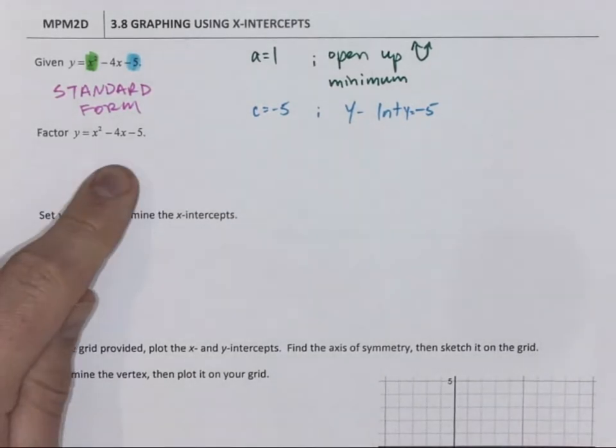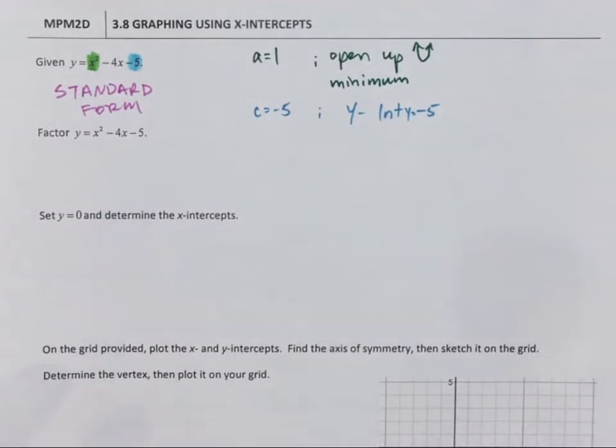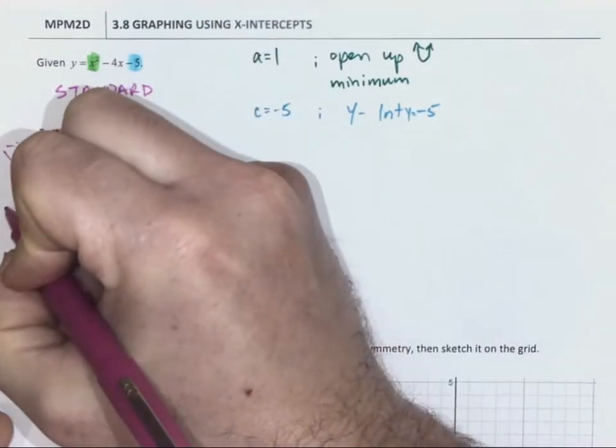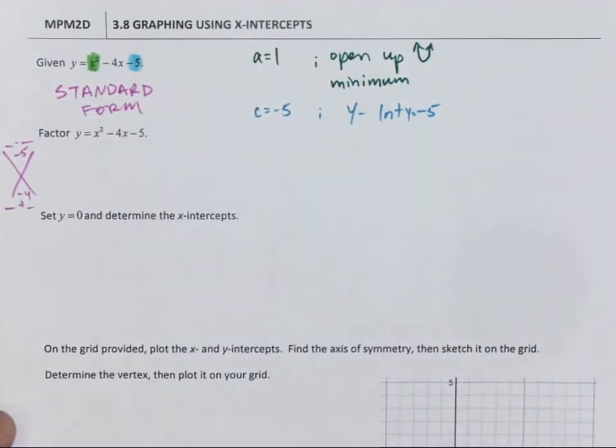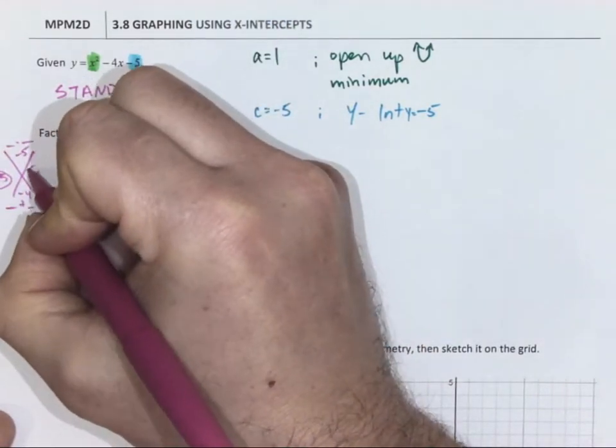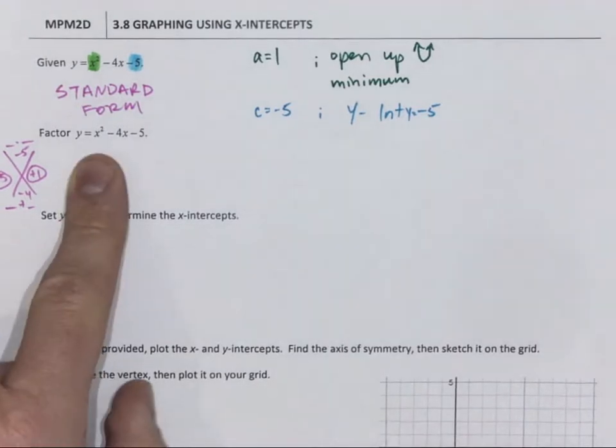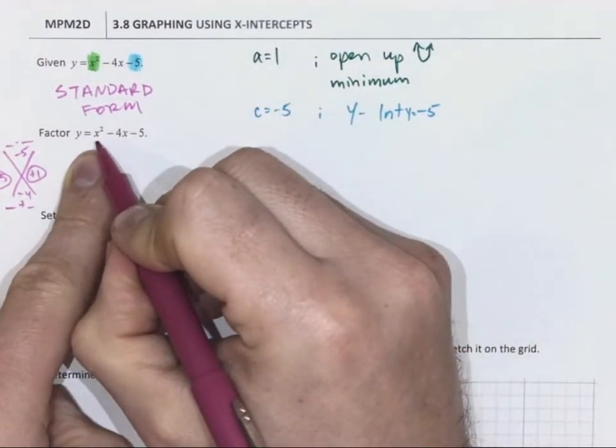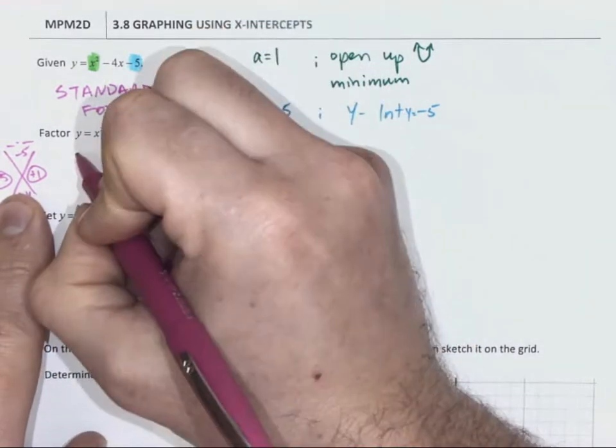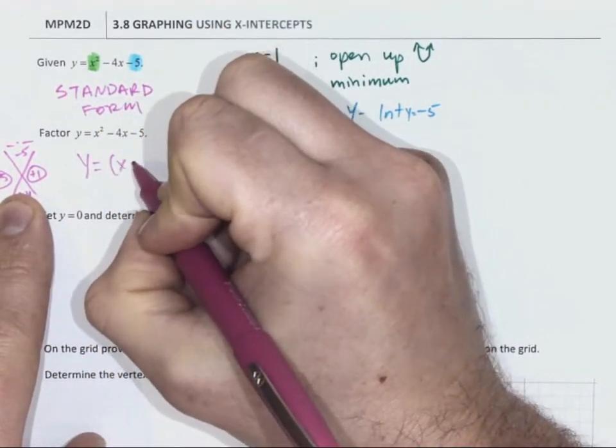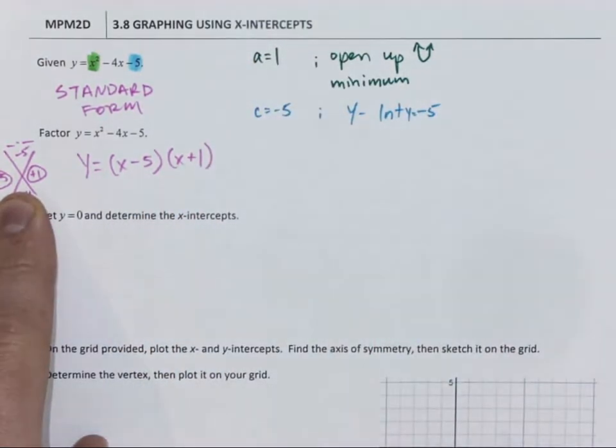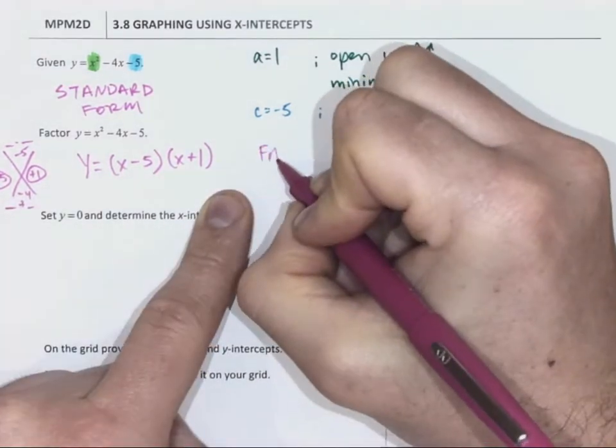If I need to factor it, I'm looking for two numbers that multiply to negative 5 and add to negative 4. And those are going to be negative 5 and positive 1. Because this is a simple trinomial, meaning that the coefficient is 1, those numbers go right into brackets. So factored form is x minus 5 and x plus 1. Remember that is factored form.